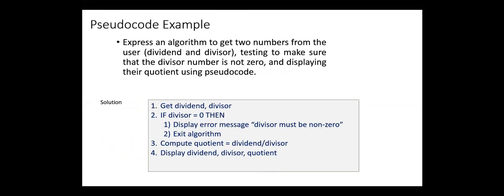For example, we have here a pseudocode to get two numbers, dividend and divisor, and to compute the quotient. Here we have to test if the divisor equals zero, then display error message, divisor must be non-zero, and we exit the algorithm. Otherwise, we compute the quotient and display the three values: dividend, divisor, and quotient.